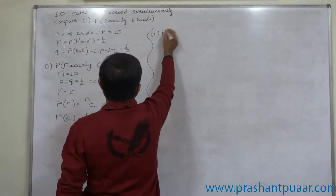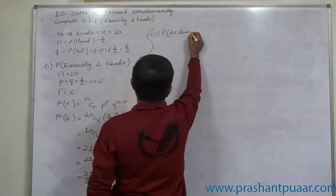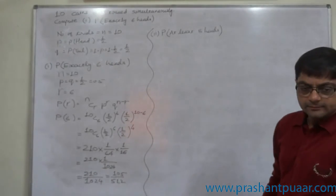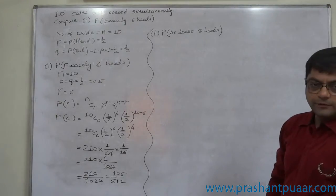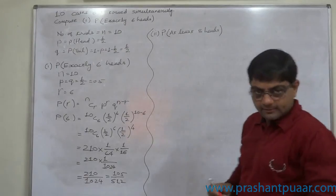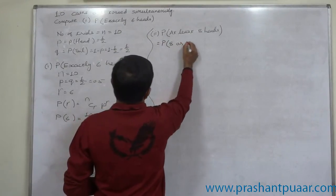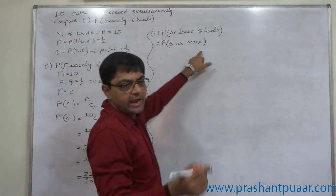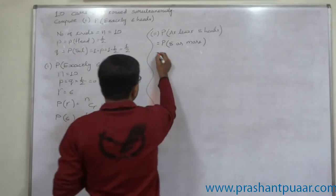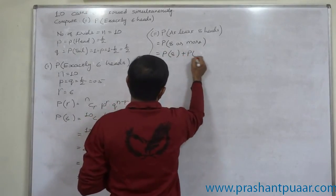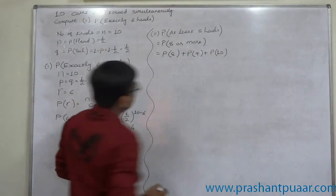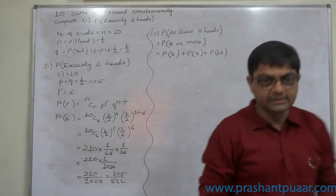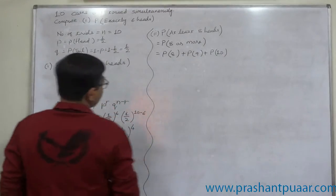Second case: probability of at least 8 heads. 'At least 8' means 8 or more — and since r cannot exceed n, that means 8 or 9 or 10. We calculate P(8), P(9), and P(10) separately and sum them for the final answer.